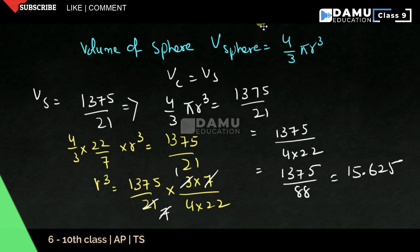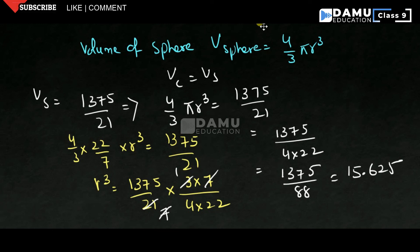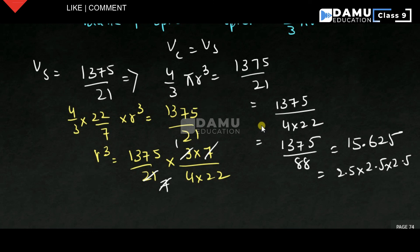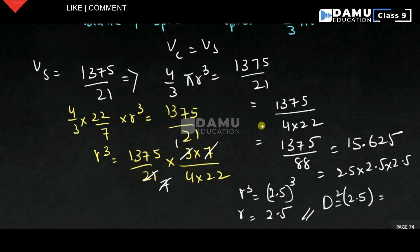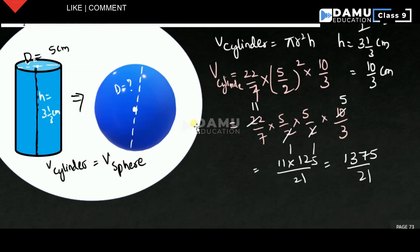15.625 will be equal to 2.5 whole cube — we are getting that 15.625. So we can verify: 2.5 into 2.5 into 2.5 gives 15.625. Therefore r³ = 2.5 whole cube, which means r = 2.5. That is the radius. Then what is its diameter? 2 into r = 2 into 2.5 = 5 centimeters. So the diameter is 5 centimeters. Both are the same — the cylinder diameter is also 5 centimeters and the sphere radius is 2.5 centimeters. Thanks for watching. Please subscribe.